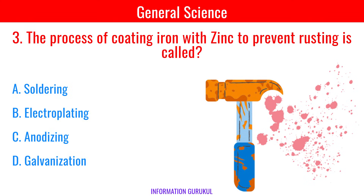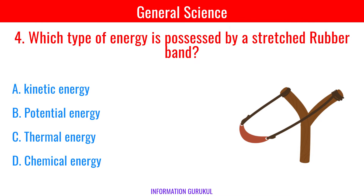The process of coating iron with zinc to prevent rusting is called Galvanization. Which type of energy is possessed by a stretched rubber band? Potential energy.